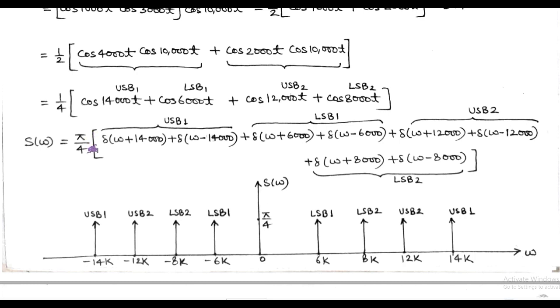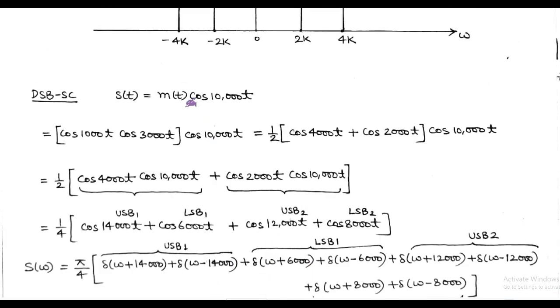So accordingly, we can determine the spectra of the double sideband suppressed carrier corresponding to the modulating signal MT equals cos(1000t)·cos(3000t).